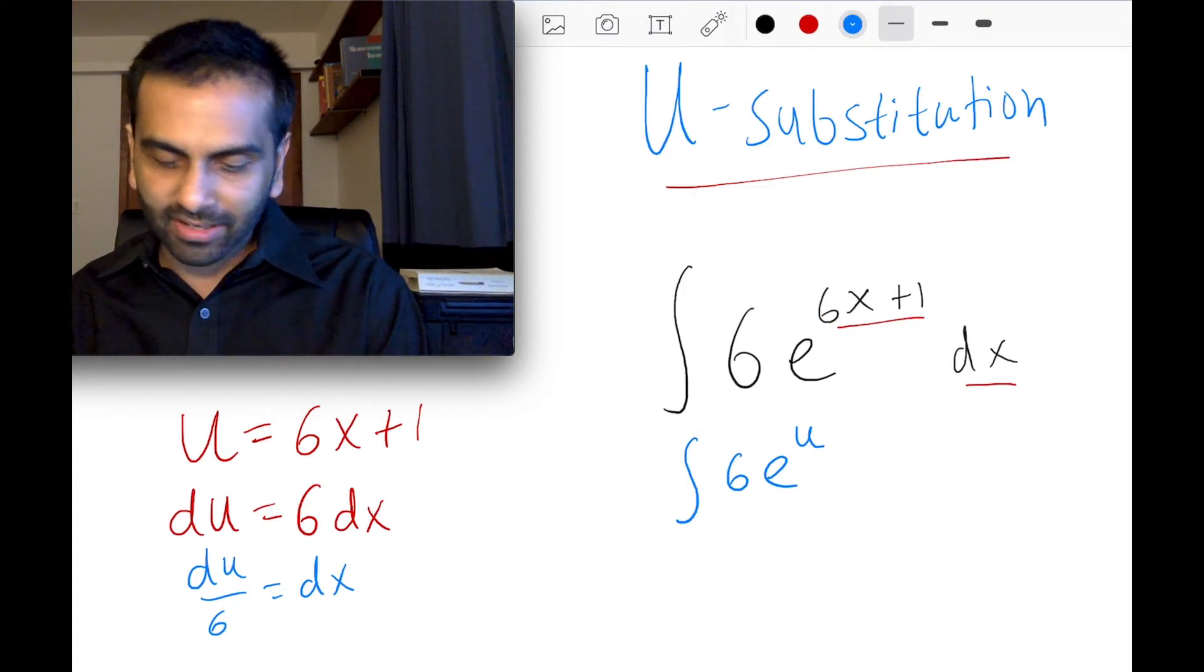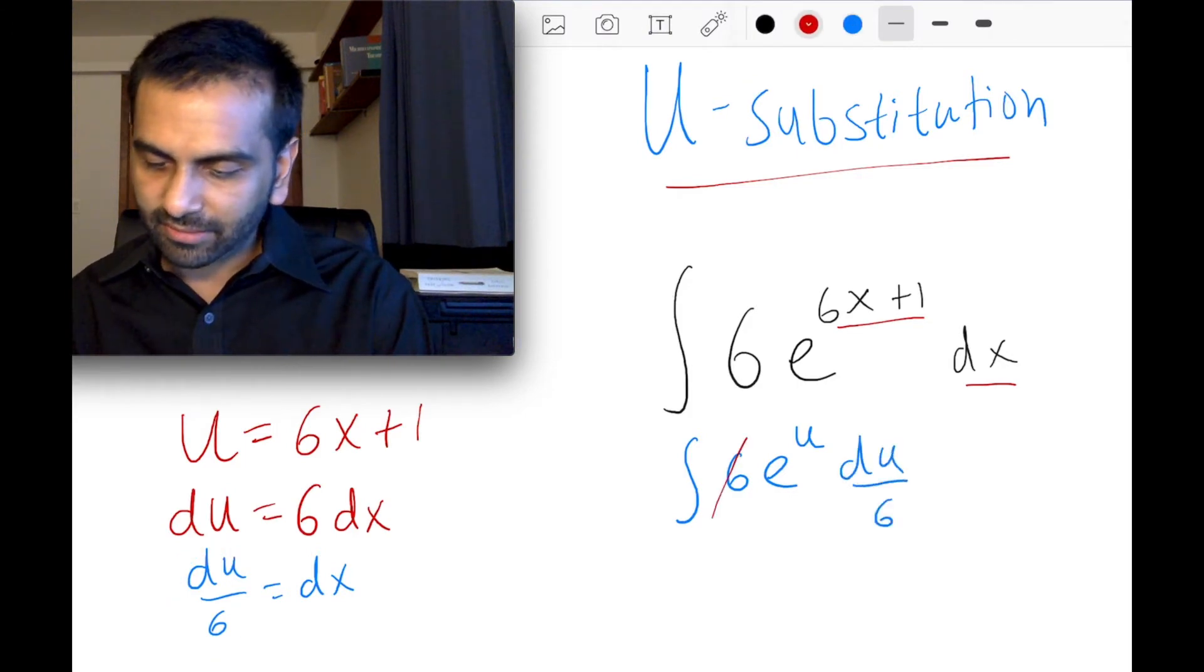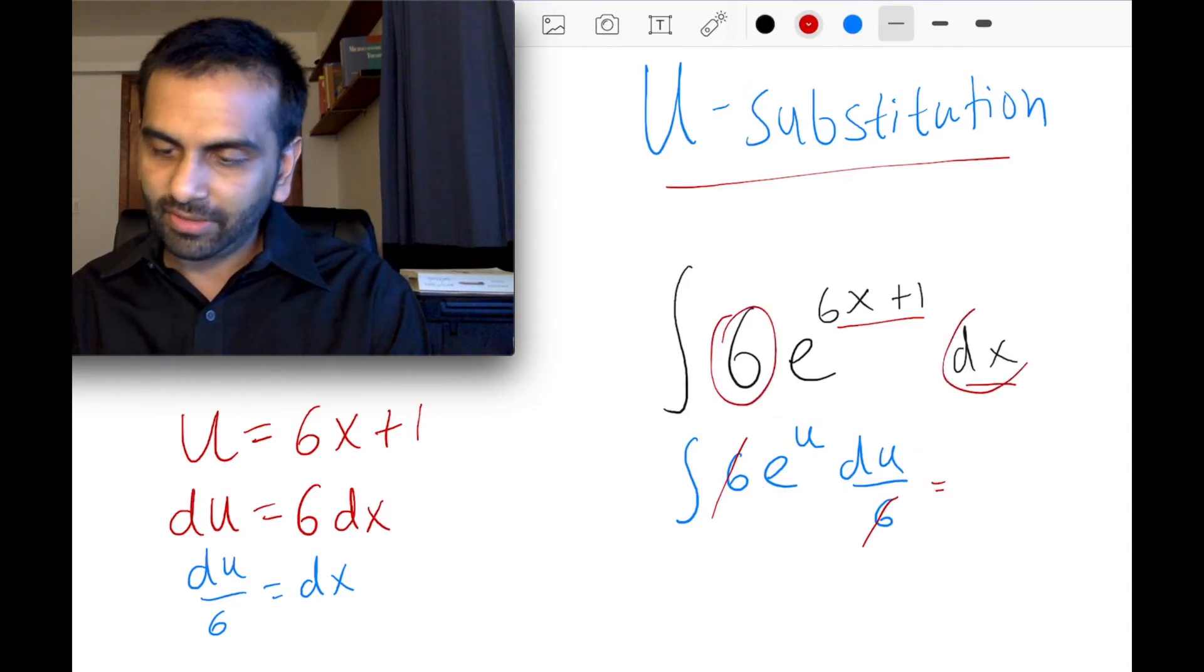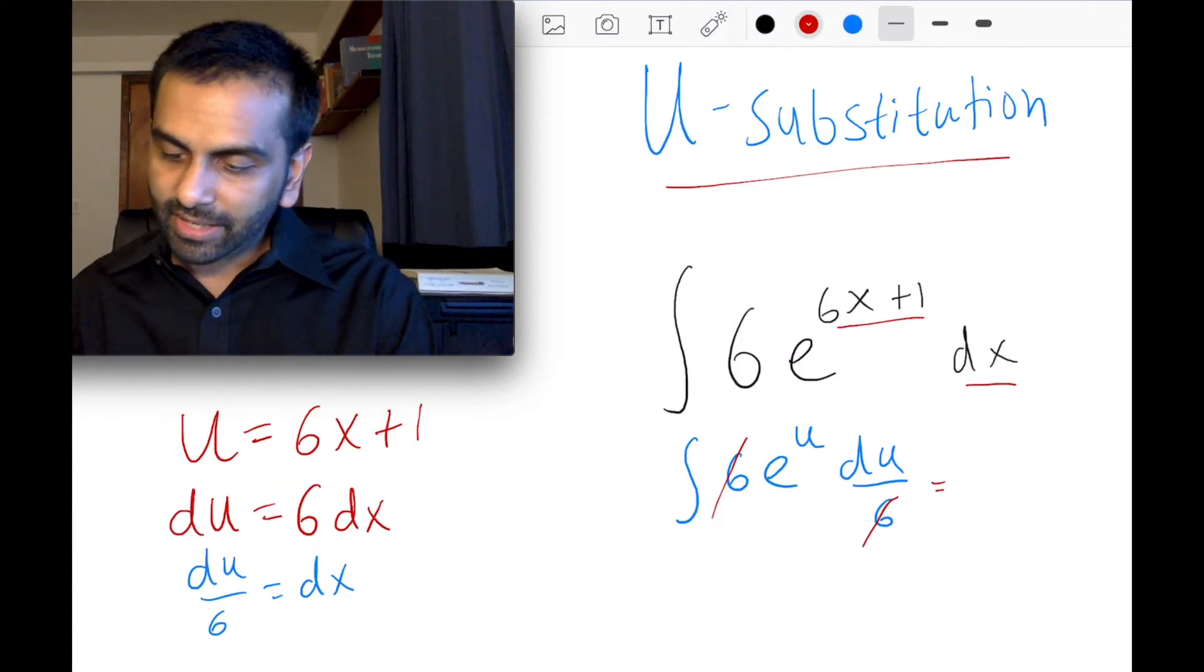Anyway, so we substitute that out with what we wanted. But then this dx we said is just du over 6. And then here, the 6s cancel. So we're left with just e to the u du. That's sort of what I said earlier, like if you just noticed that, oh yeah, 6dx is the derivative of, you know, this. So either case, you have the integral of e to the u du.